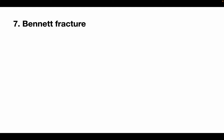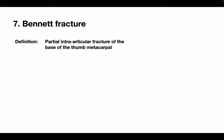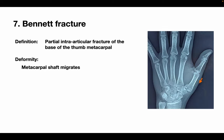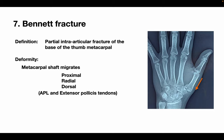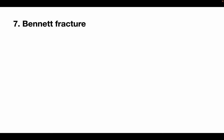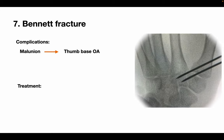Next we'll move on to Bennett's fracture. It is the partial articular fracture of the base of the thumb metacarpal. The metacarpal shaft migrates proximally, radially and dorsally due to the pull of abductor pollicis longus and the extensor pollicis tendons. The smaller proximal fragment remains reduced intra-articularly since it is held by the beak ligament. The main complication of Bennett's fracture is malunion leading to thumb-base osteoarthritis, and the treatment is closed reduction internal fixation with multiple K-wires.